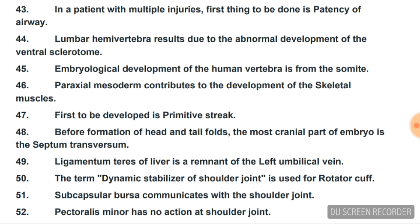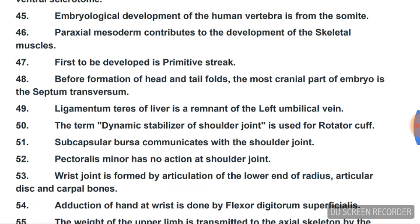Embryological development of the human vertebra is from the somite. Paraxial mesoderm contributes to the development of skeletal muscles. The first structure to be developed is the primitive streak, before formation of head and tail folds.